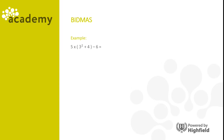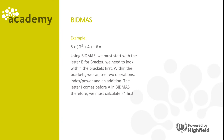Here's an example: five times (three squared plus four) minus six. Using BIDMAS, we need to start with B for brackets and look within the brackets first. Within the brackets we can see two different operations — index or power, and addition. The letter I comes before A in BIDMAS, so we must calculate the three squared first.